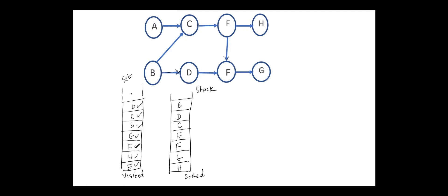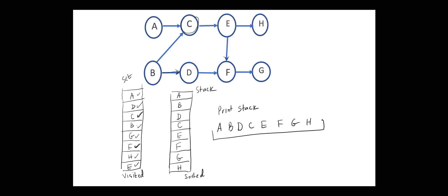Now we have only the node A unvisited. The child of A is C, but C is already visited, so we can push A into the stack. Since all the nodes are visited, we can print the stack: A, B, D, C, E, F, G, H. And this is the topological ordering for this graph.